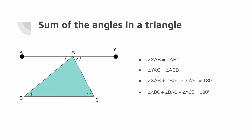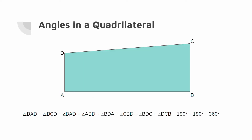We can apply this proof to show that the angles in a quadrilateral add up to 360 degrees. This is shown by demonstrating that a quadrilateral can be split into two triangles, and by adding the angles of these two triangles, they add up to 360 degrees.